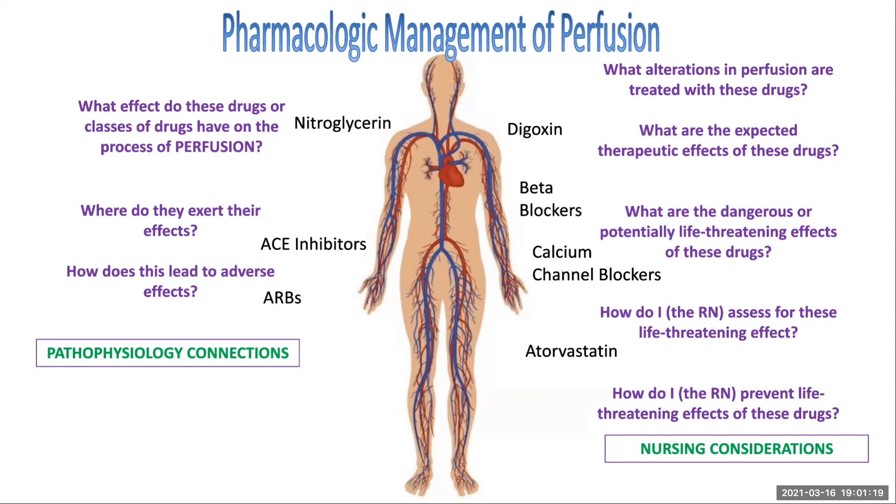And then most importantly, how do I prevent the life-threatening effects of these drugs? Do I need to take an apical pulse for at least one minute before I give a certain drug? If I don't do that, am I remiss? And I give that drug, could something happen to that patient? What about assessing your inpatient and talking to your patient about muscle pain and whether or not they're having any cramping or muscle pain before you give a certain drug and that you can actually cause a serious life-threatening adverse effect if you don't assess for that before the administration of a drug.